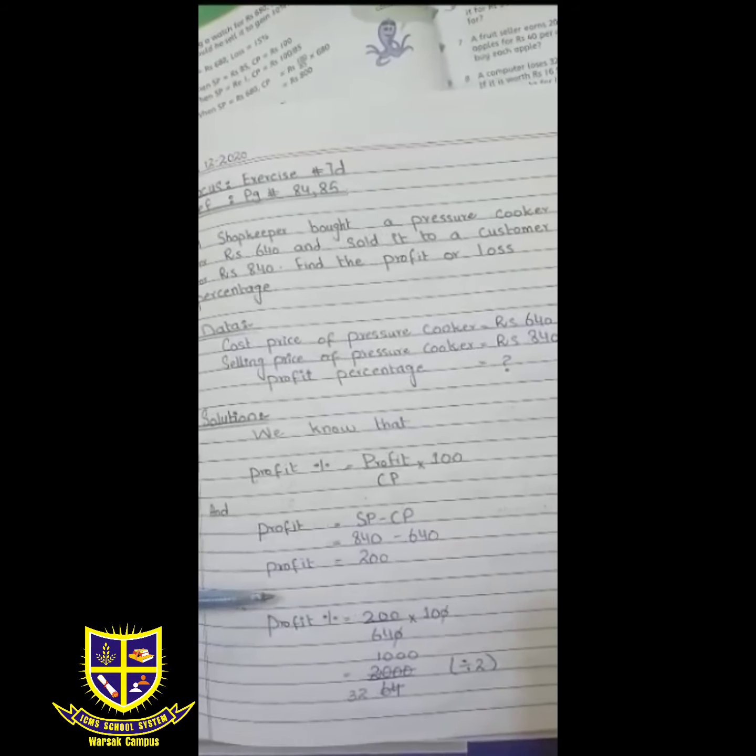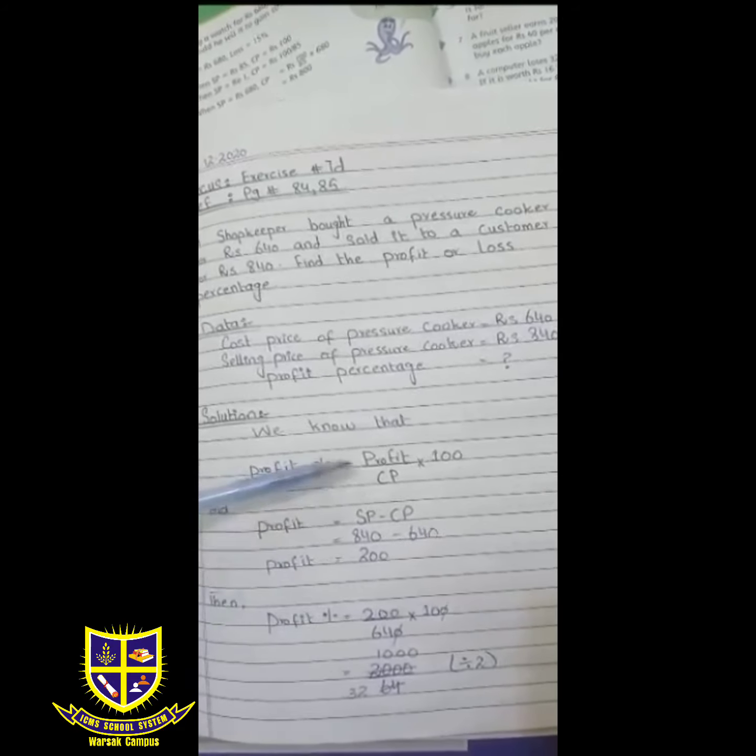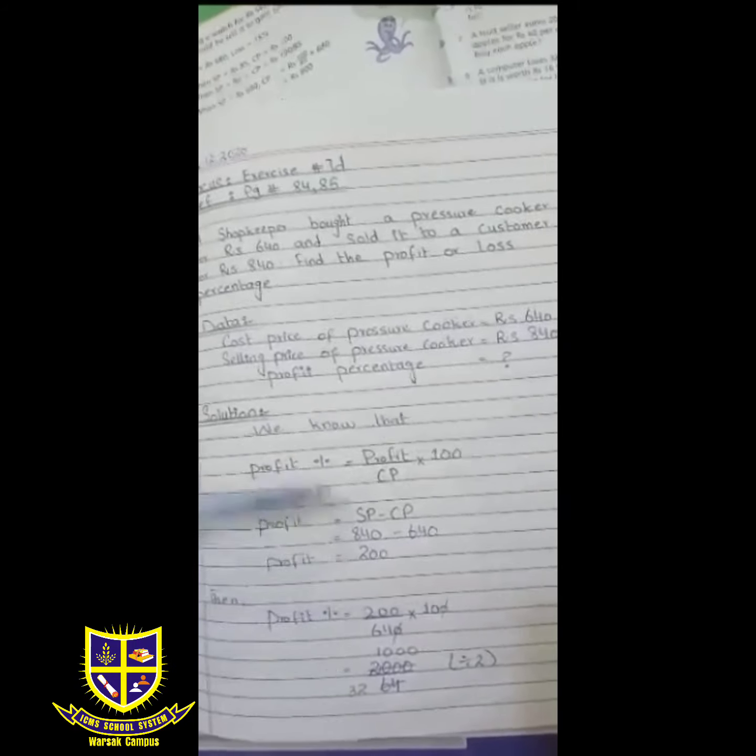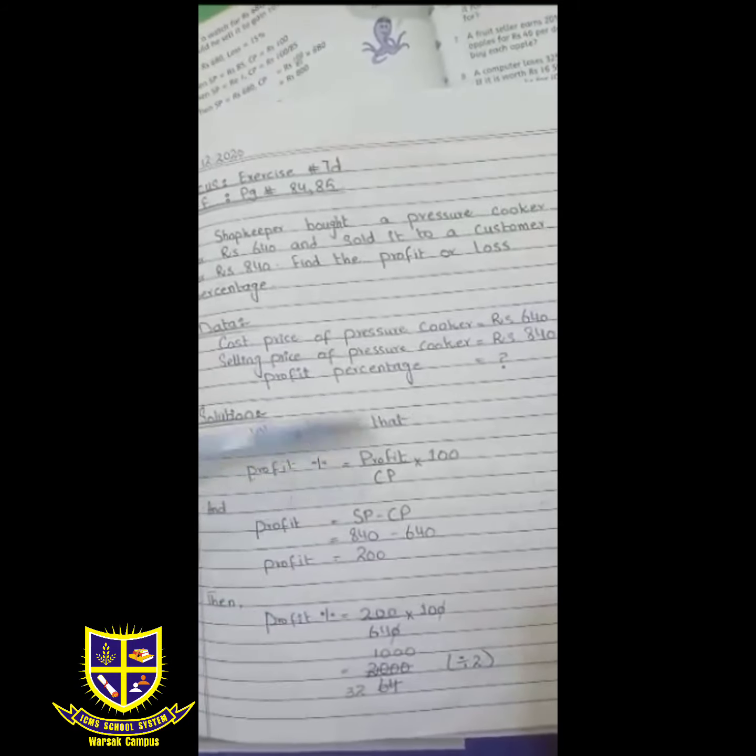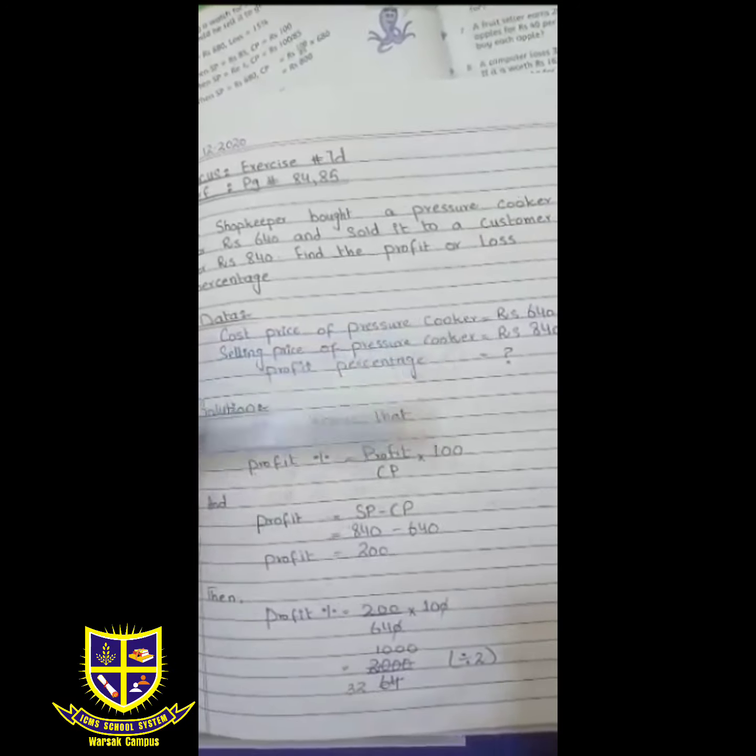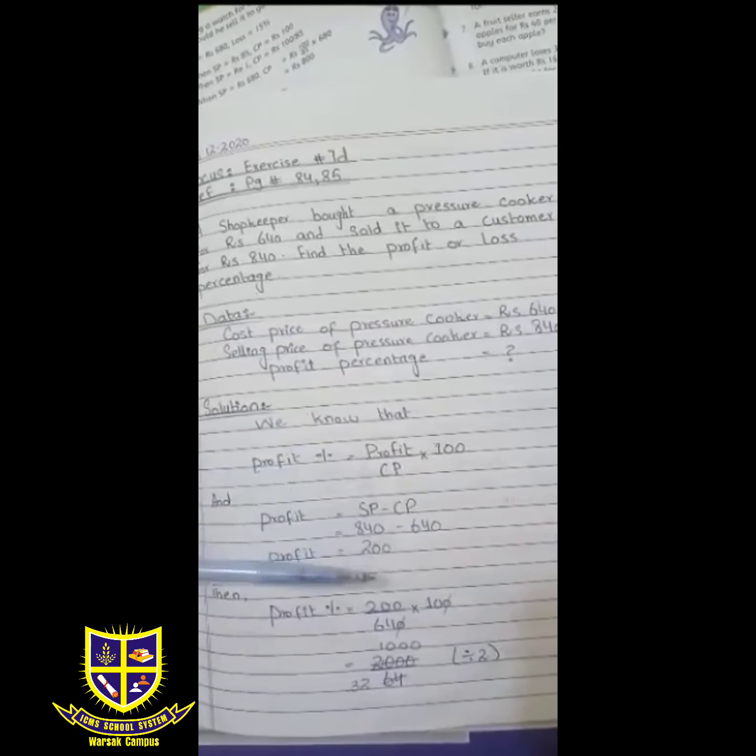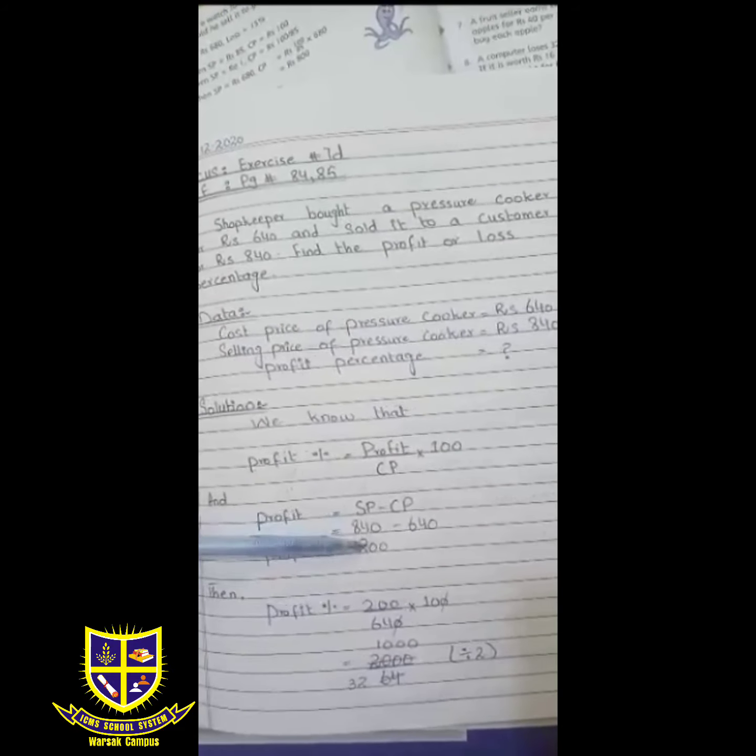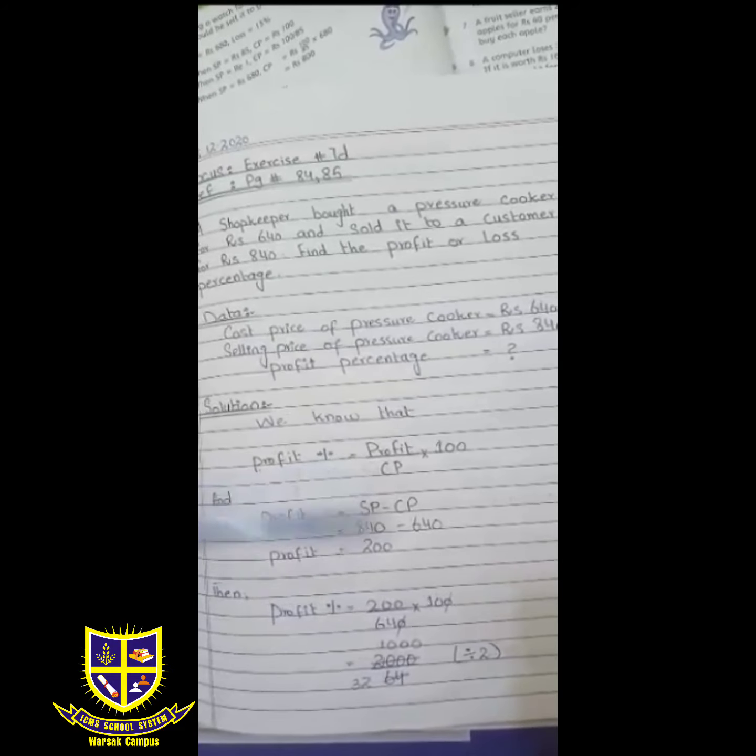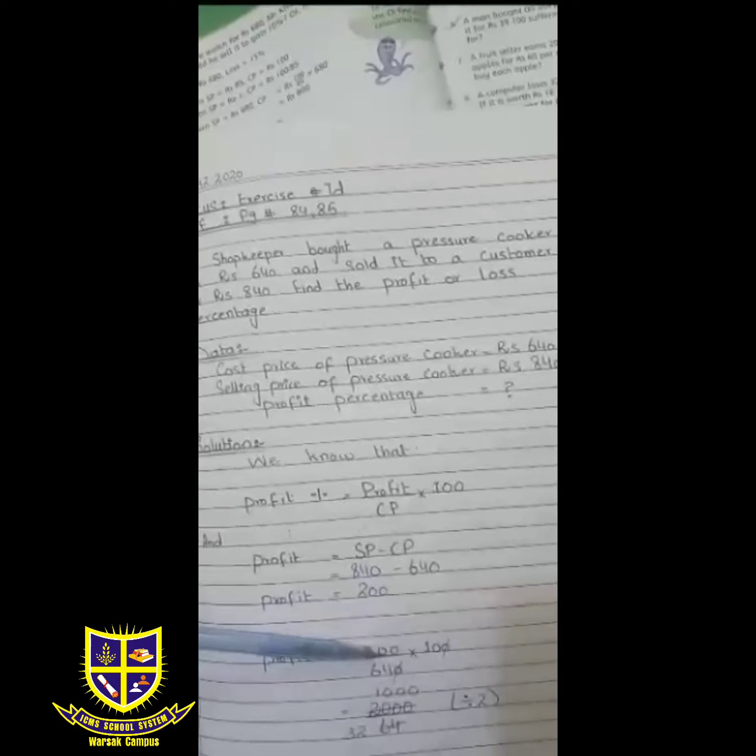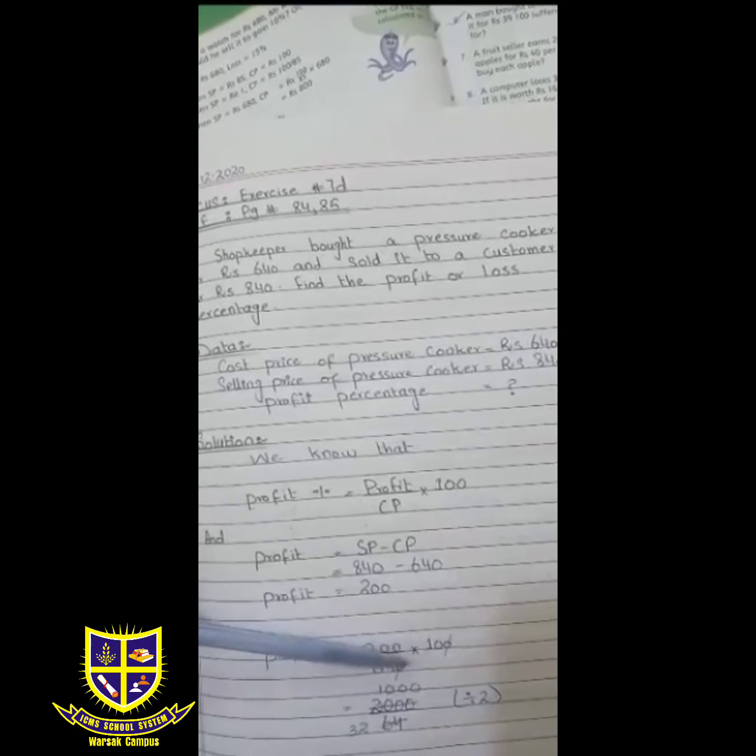Now, profit percentage how to find? This formula is our formula. Profit we have found. CP we have cost price. We put in this formula. Profit we have 200, CP we have 640. We multiply by 100 with this.